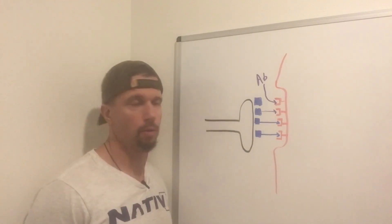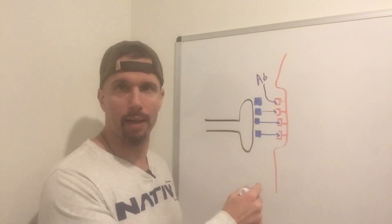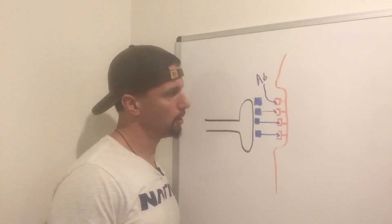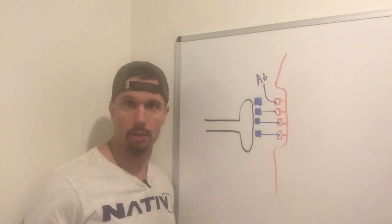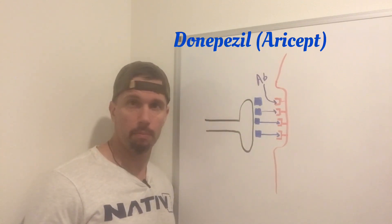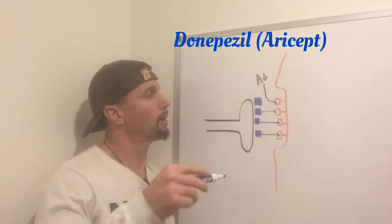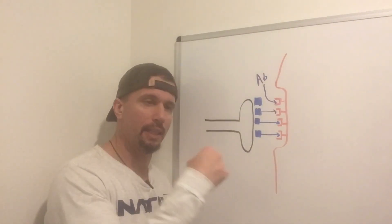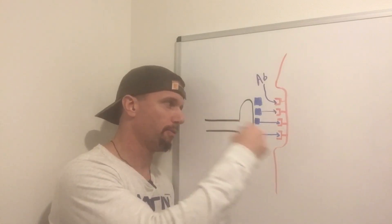You also want to probably treat the root cause of it through immunotherapy, but this is going to help symptomatically. Another common drug prescribed for Alzheimer's disease is called Donepezil or Aricept, and it works the same way. When a patient is suffering from Alzheimer's disease, there's decreased acetylcholine in certain areas of the brain.